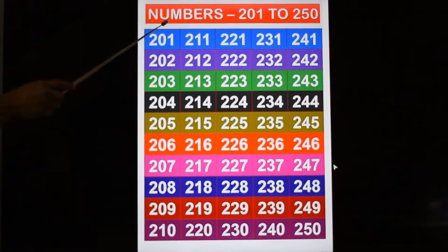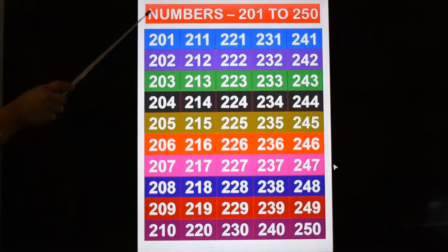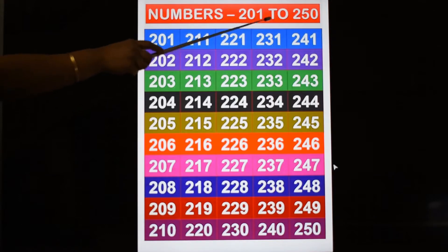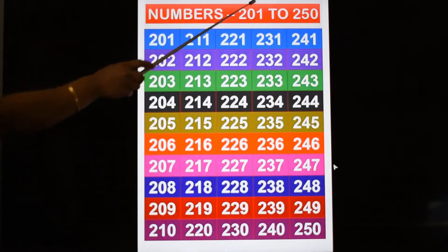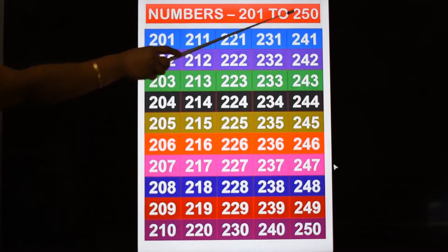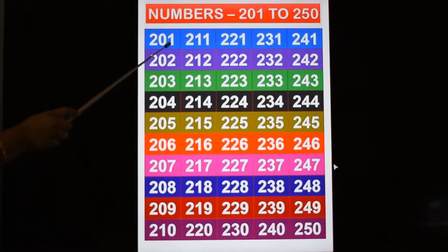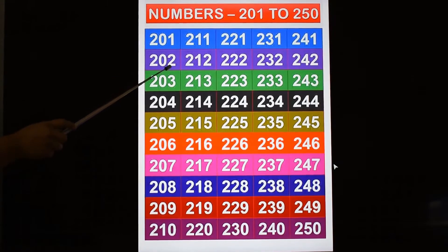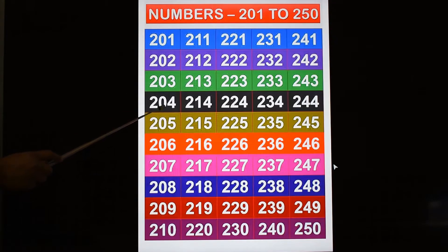Numbers 201 to 250. N-U-M-B-E-R-S, numbers. 201 to 250. 201, 202, 203, 204.